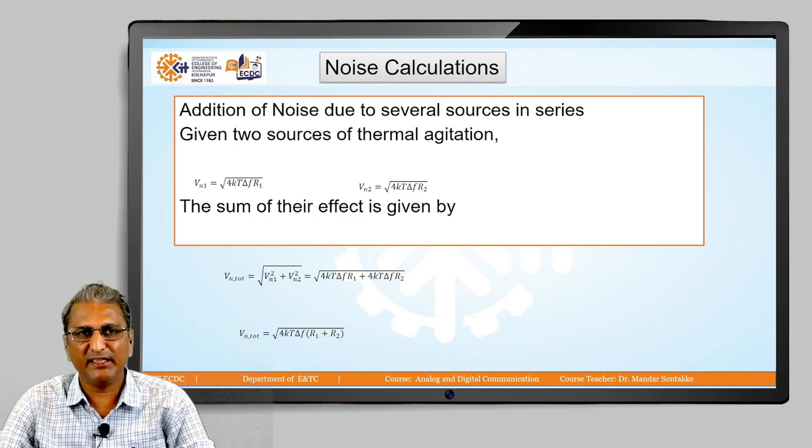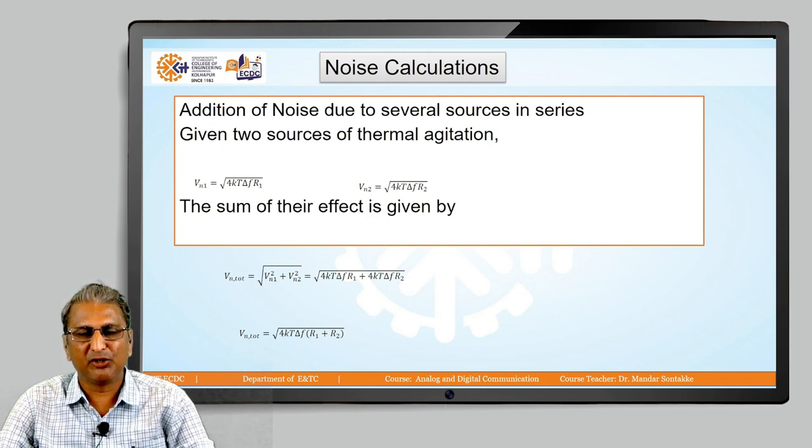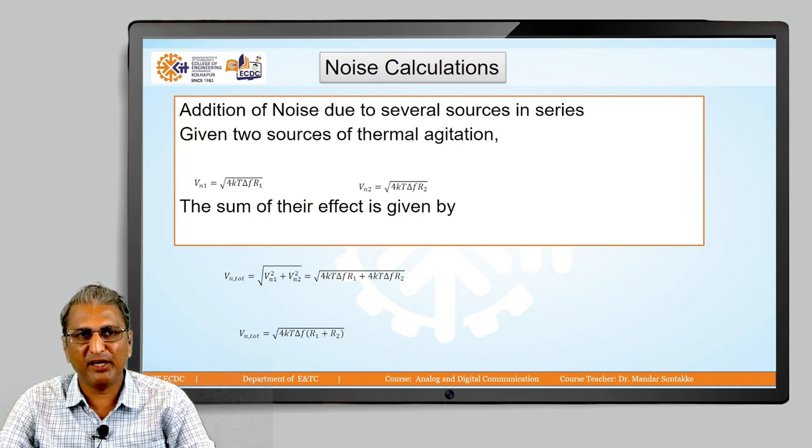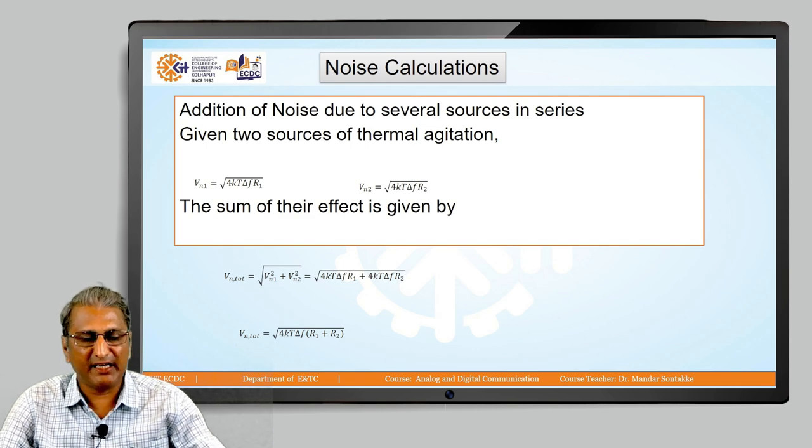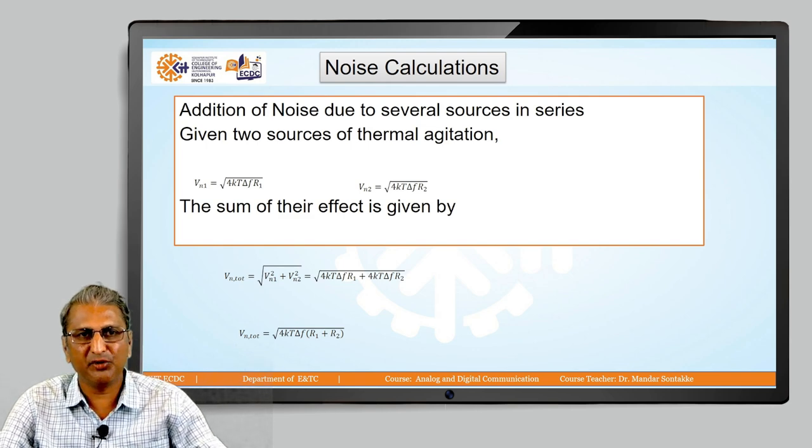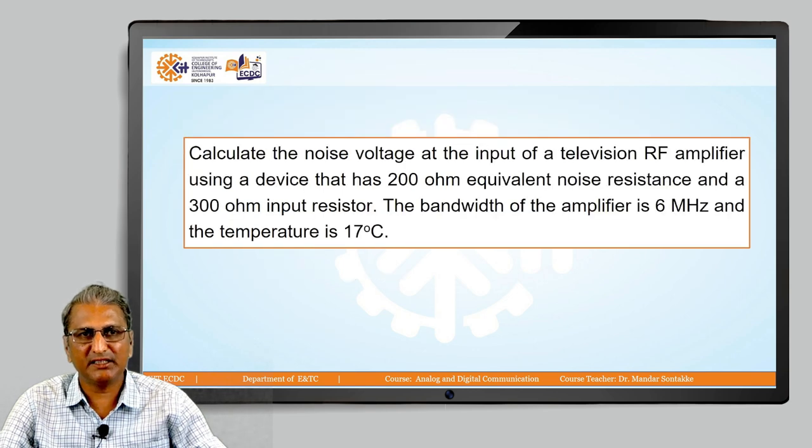Now, the total is given by Vn total equals square root of Vn1² plus Vn2². Put the value of both and the final answer we are getting is Vn total equals square root of 4kTΔf times (r1 plus r2).